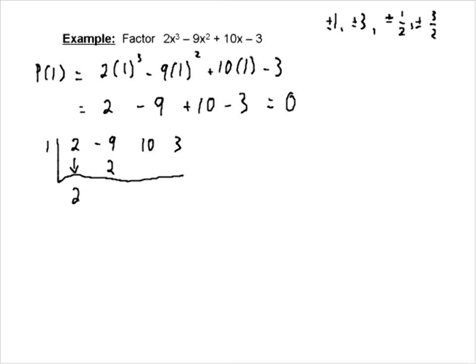2 times 1 is 2. Negative 9 plus 2 is negative 7. Negative 7 times 1 is negative 7. 10 minus 7 is 3. 3 times 1 is 3. And I've got to write my coefficients right, because I know this remainder has to be equal to 0.